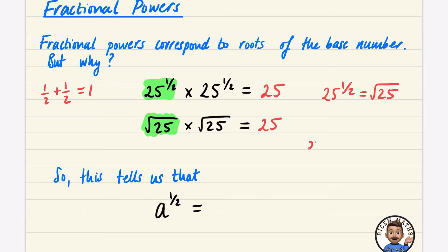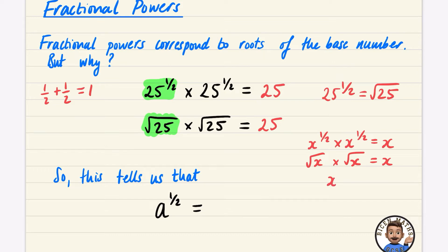We can also see this algebraically: x to the power of 1/2 multiplied by x to the power of 1/2 equals x to the power of 1. And the square root of x times the square root of x also equals x — that's just the definition of the square root. So x to the power of 1/2 means the square root of x. Therefore, a to the power of 1/2 means find the square root of a.